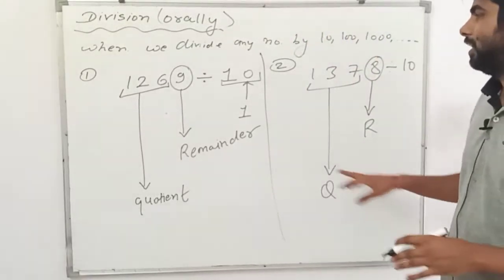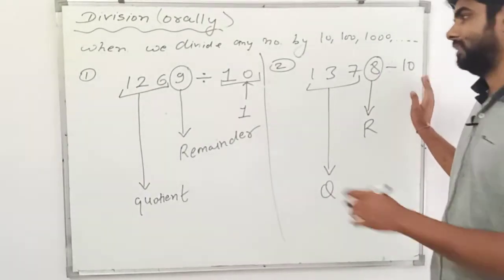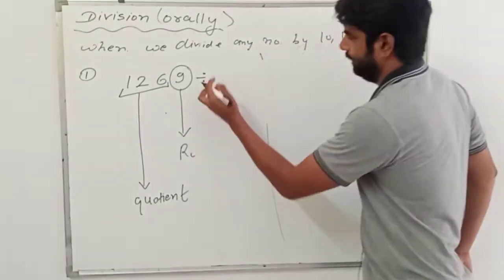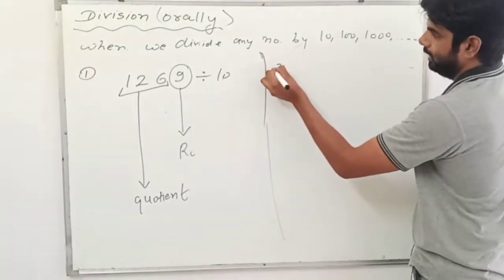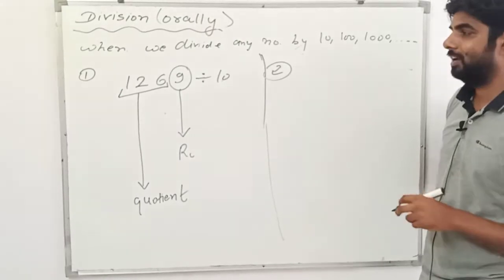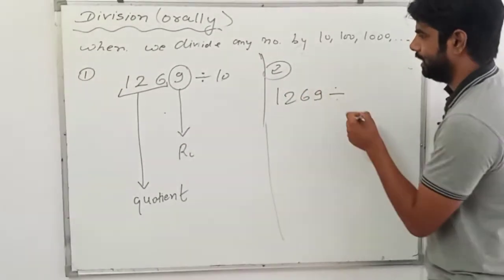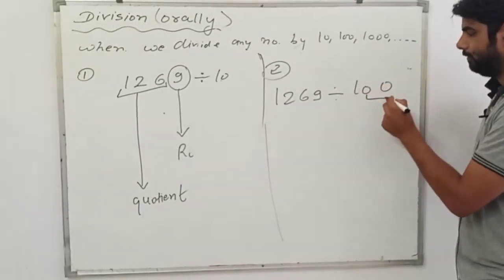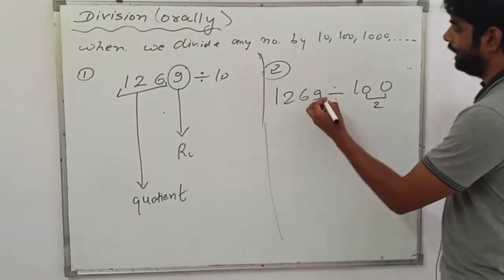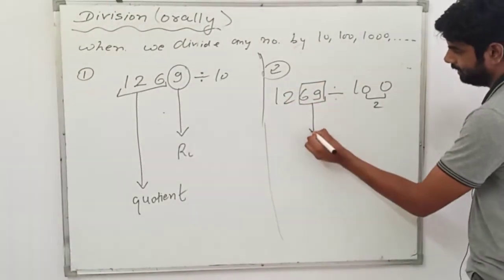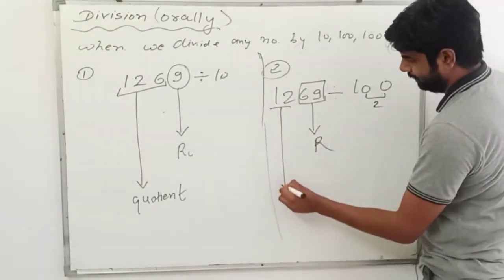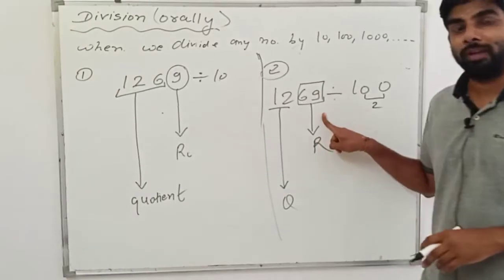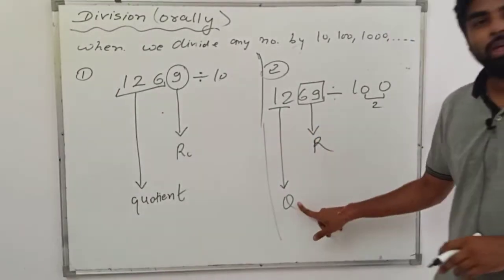Now let's learn how to divide by 100. Suppose the question is 1269 divided by 100. Here you can see there are two zeros. So we take two digits from the right and they become our remainder, and the rest of the digits become our quotient. Whatever the number of zeros there are, the same number of digits we take from the right as the remainder.